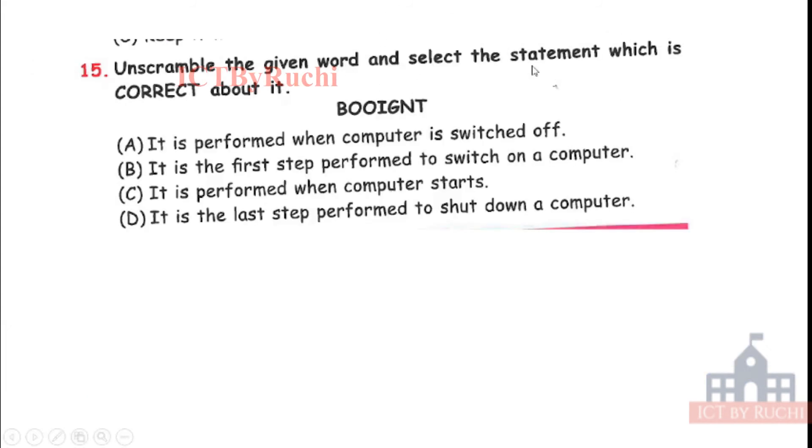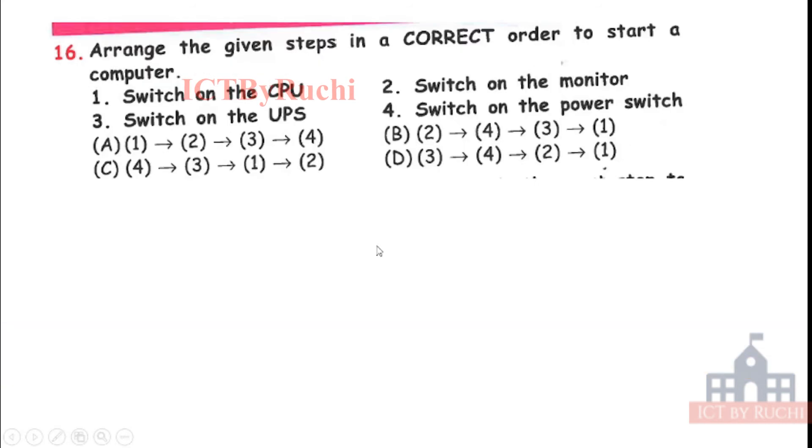Next question. Unscramble the given word and select the statement which is correct about it. It is like certain B, O, O, I, G and T. So firstly we have to unscramble it and see what it is making. So it is making booting. Now we will tell what is its operation. A. It is performed when computer is switched off, B. It is the first step performed to switch on a computer, C. It is performed when computer starts, D. It is the last step performed to shut down a computer. Okay. Tell me the answer first. Answer is C. Booting is performed when CPU is turned on. Okay.